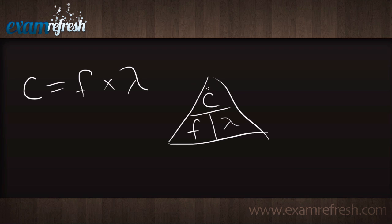If I want to find whatever's on top, it doesn't matter what formula we use in this triangle. If we're trying to solve for propagation speed, we can see that it's going to be frequency times wavelength.